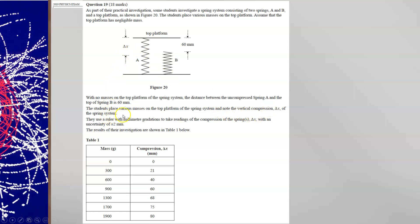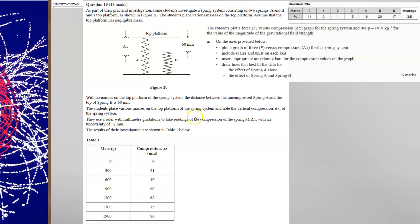That's spring A and spring B together. They use a ruler with millimetre gradations to take readings of the compression of the springs delta x with an uncertainty of plus or minus two millimetres. The results are shown in the table below. The question then asks you to plot a graph of force against compression and the marks across the state were on average three and a half out of six.